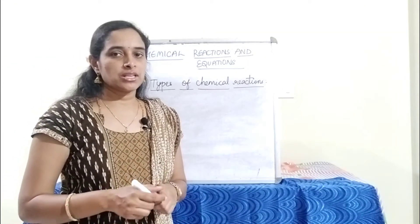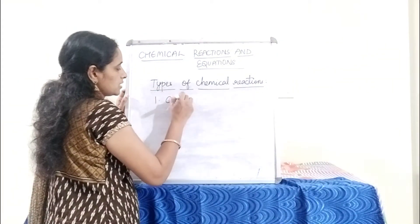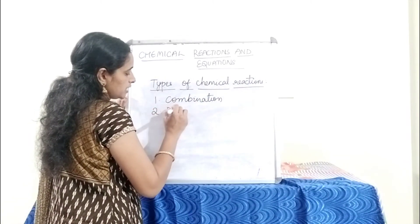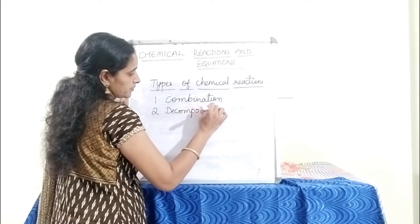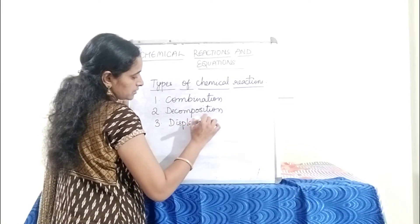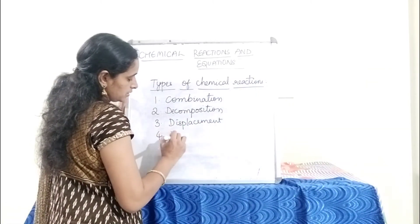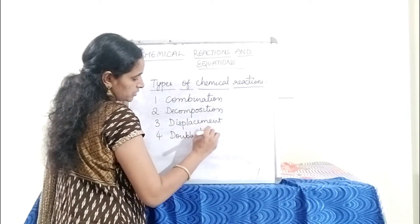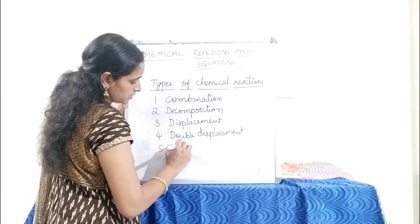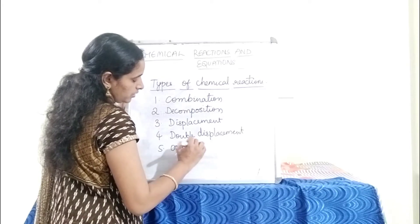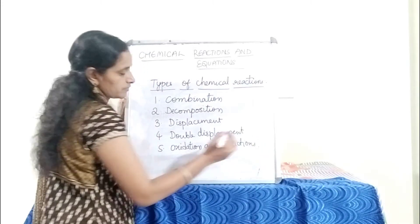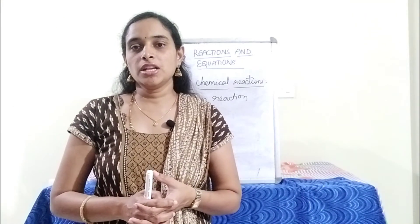Now we will see the types of chemical reactions. The first is combination reaction, next is decomposition reaction, then displacement reaction, double displacement reaction, and finally oxidation and reduction reaction. We will learn each type in detail.